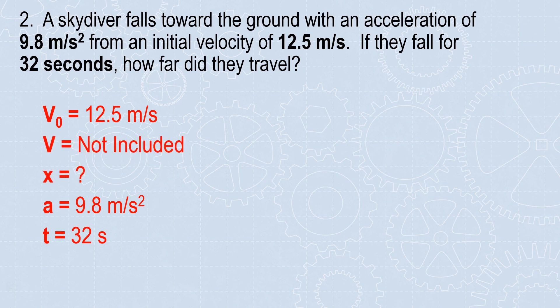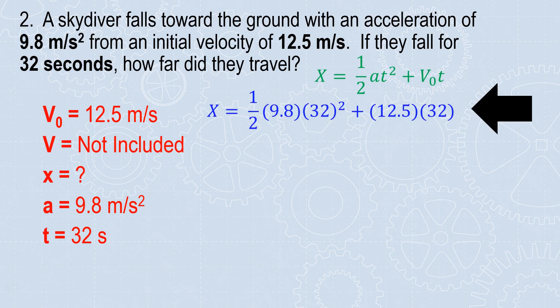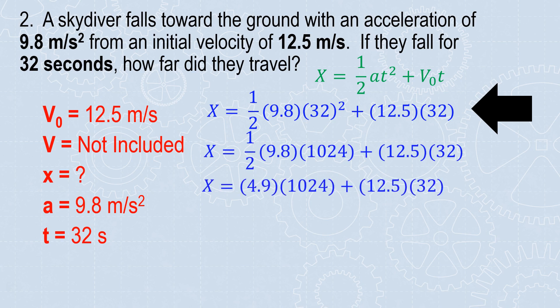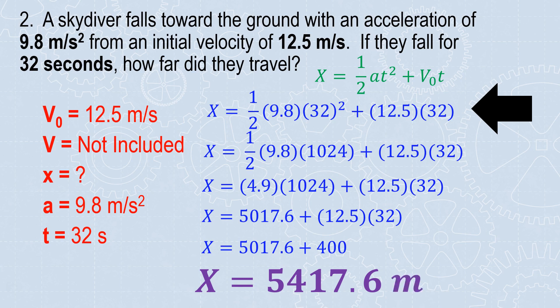We have our givens, including what we're solving for and what's not included. There's our equation. It's already substituted in, so you just need to evaluate to solve for x. I'm going to take care of those exponents, then take care of all my multiplication from left to right. Notice I'm doing one operation at a time. I'm going to do 12.5 times 32 before I finish with addition. Addition and subtraction always come last in order of operations. Finalize your answer by throwing a unit on there and checking your work.